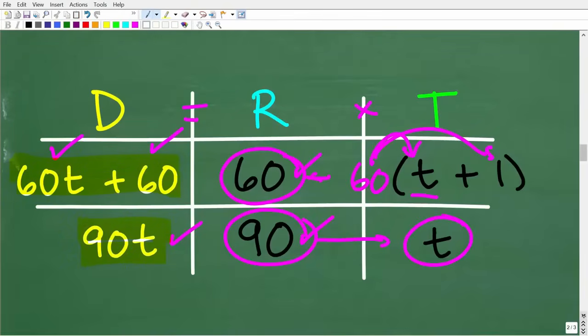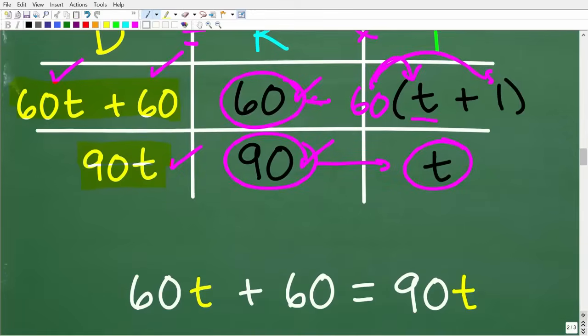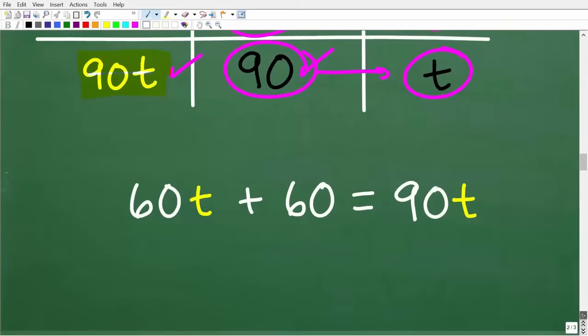So what we can do is figure out what is this distance equal to this distance. So we can use a simple algebra equation to express that. And, of course, if we can solve for the variable T here, we can solve the problem.